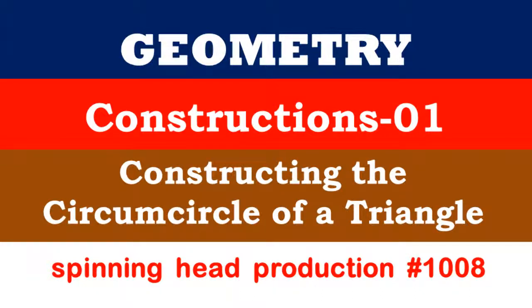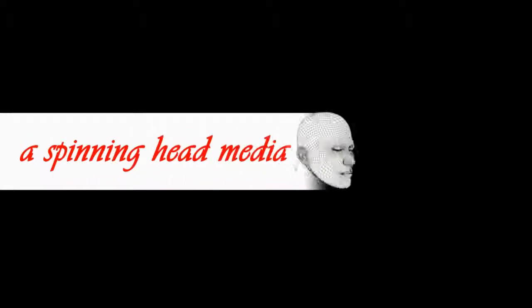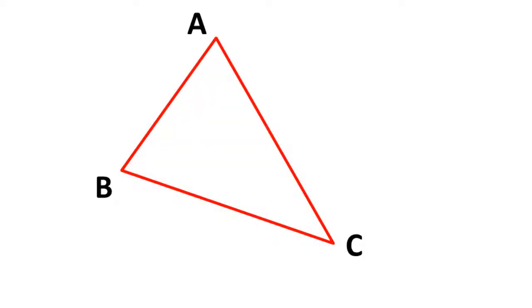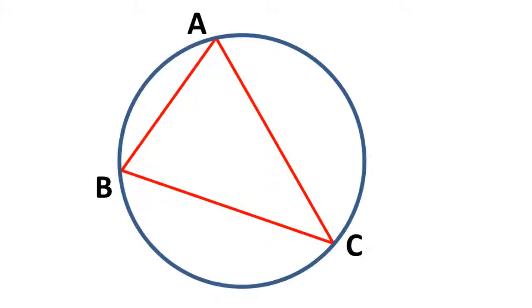In this lesson, we will learn how to construct the circumcircle of a triangle. The problem is, given a triangle ABC, to construct a circle passing through the three vertices of this triangle.